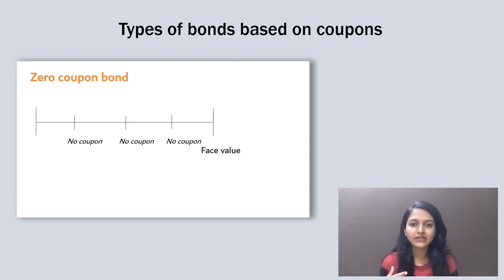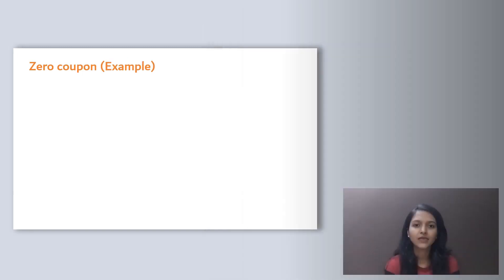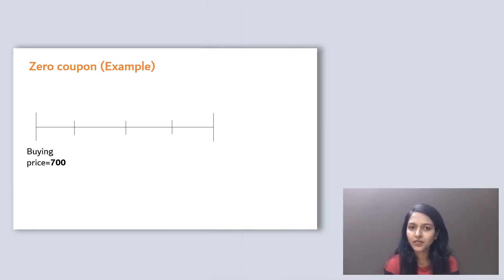Now the reason why investors buy these bonds despite not receiving coupons is that they are issued at a discounted price. Discount means the price is lower than the face value of the bond. So basically, investor buys the bond at 700 and receives 1000 at maturity. The difference of 300 is the return earned by an investor for holding the bond with no coupons received during the life of the bond.